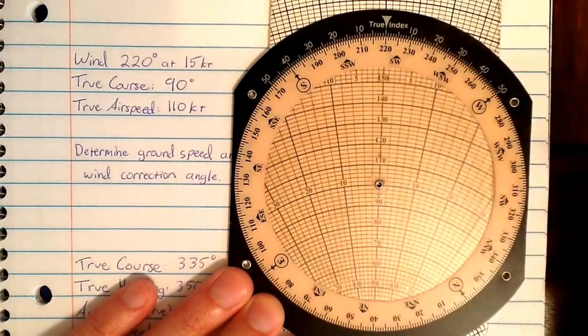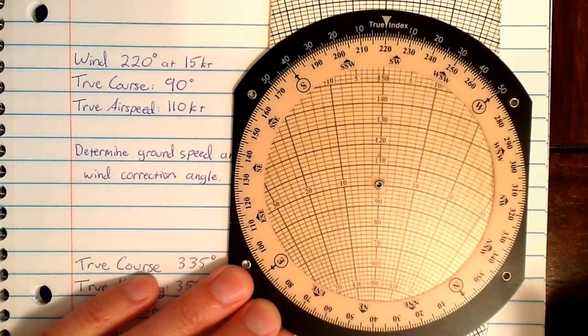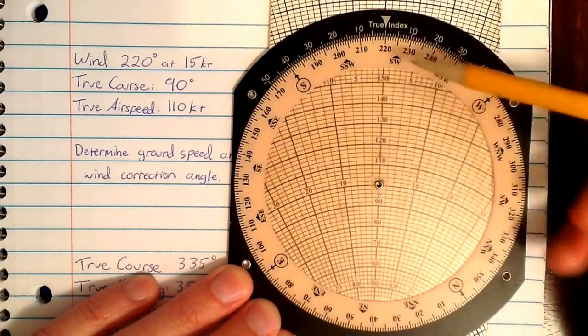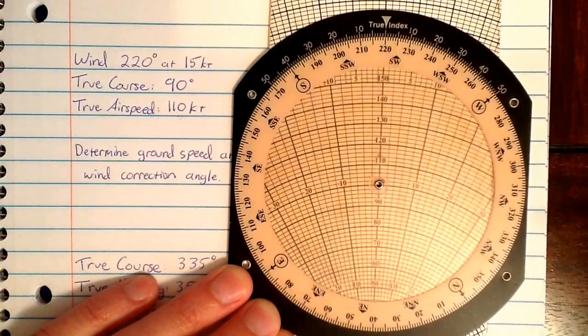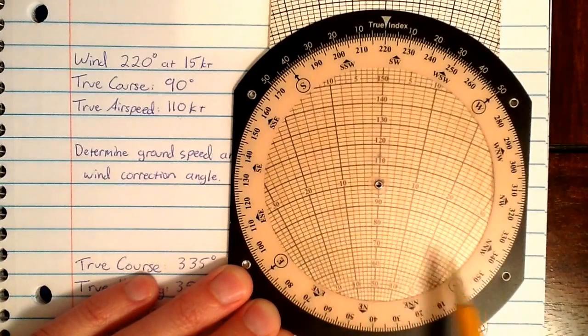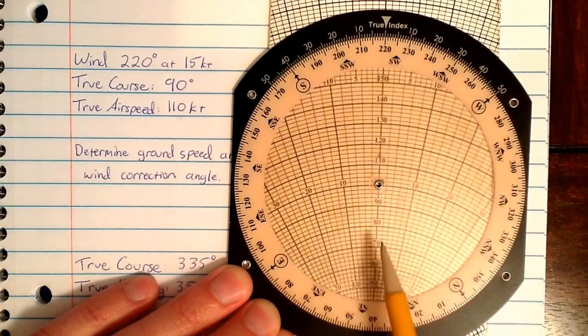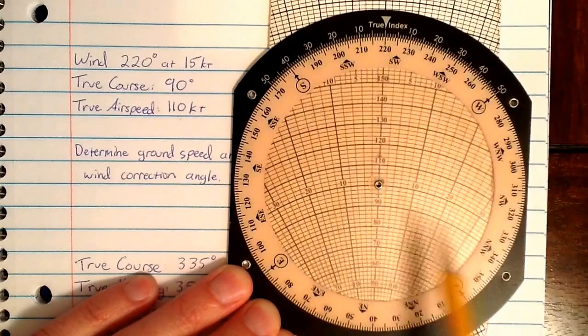Now let's rotate this around and put it into airplane mode. Remember, with airplane mode, you set what's actually happening in reference to the ground using the grommet and the true index. Then you set what the airplane is doing through the air, as in speed, and as far as heading goes, by placing a dot down here.